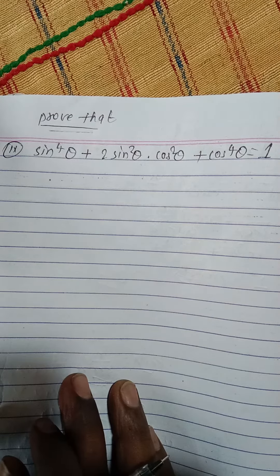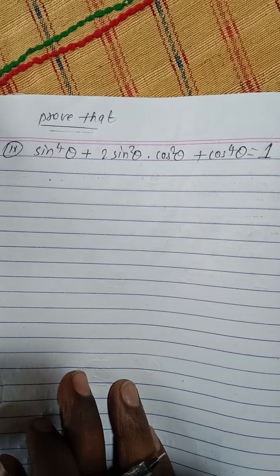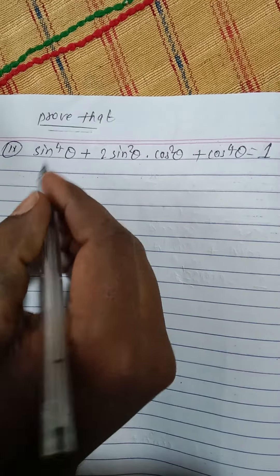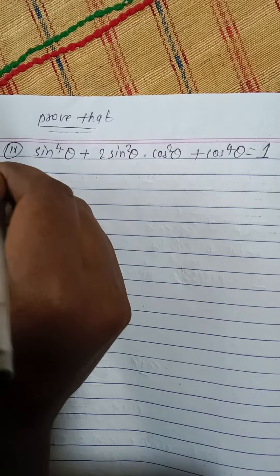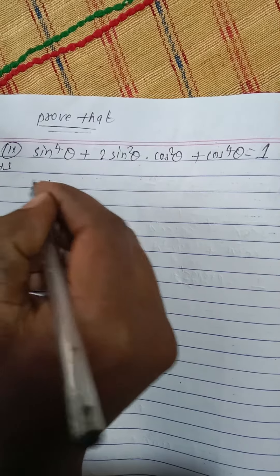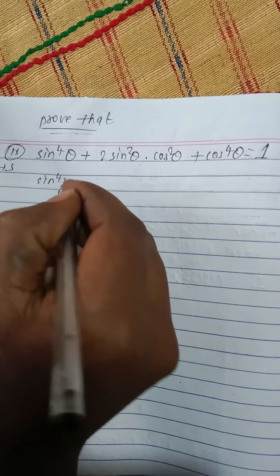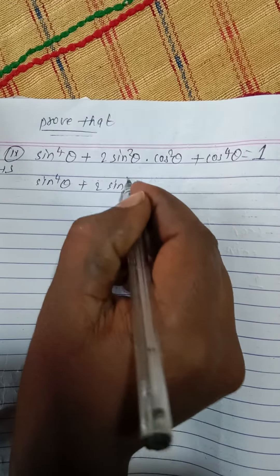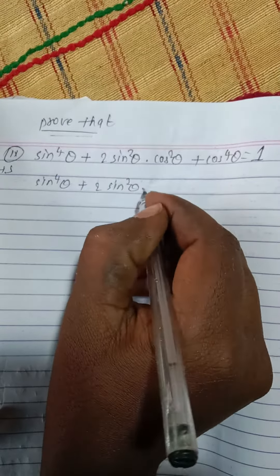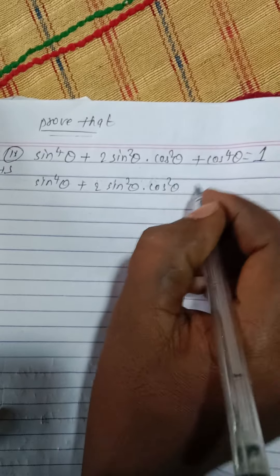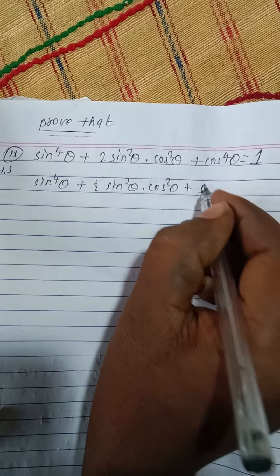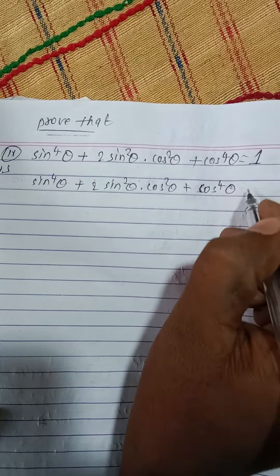In this problem we have to prove that sin⁴θ + 2sin²θ·cos²θ + cos⁴θ = 1. Now I am going to solve the left-hand side: sin⁴θ + 2sin²θ·cos²θ + cos⁴θ.